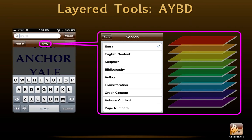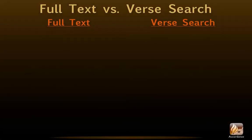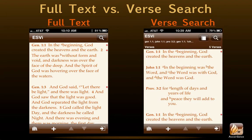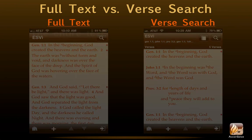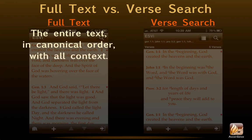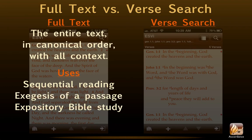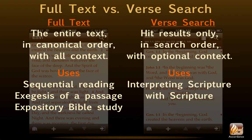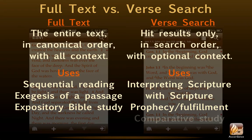Now that we've surveyed what is possible in Accordance for iOS, let's learn how to perform some basic searches. Search by verse. Normally, we view the full text of a Bible, reading through it from front to back. However, verse searches only display the results of the search. In full text, we view the entire text in canonical order with all context — normally used for sequential reading, exegesis of a passage, or expository Bible study. Verse searches, on the other hand, display only the hit results, in search order, and with optional context. People use these for interpreting scripture with scripture, perhaps prophecy fulfillment, and comparative study of passages.